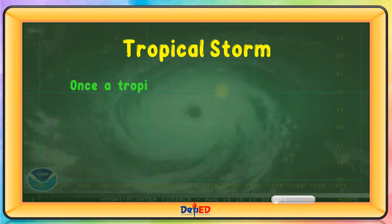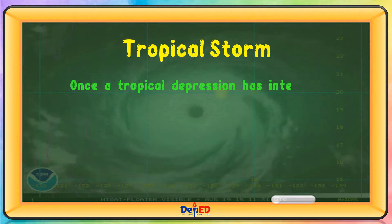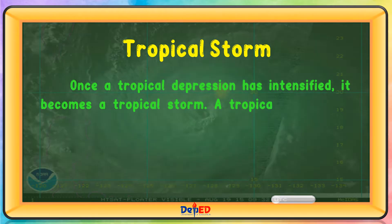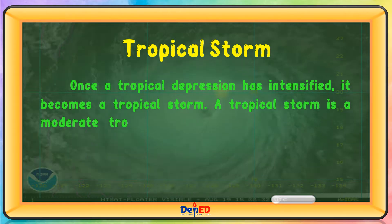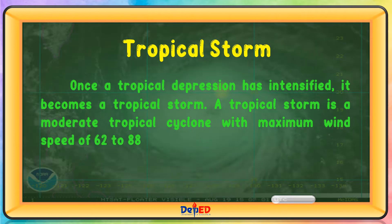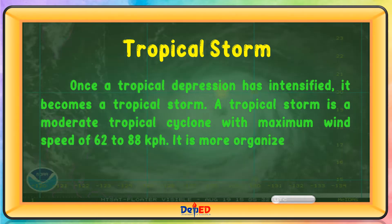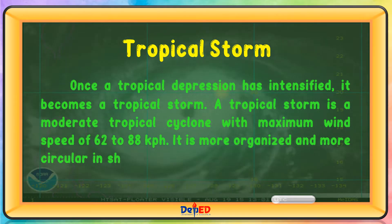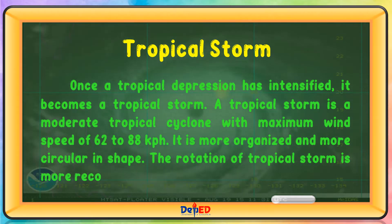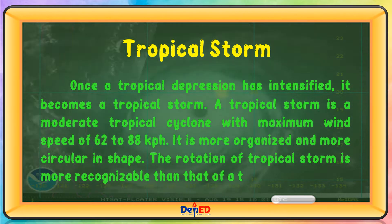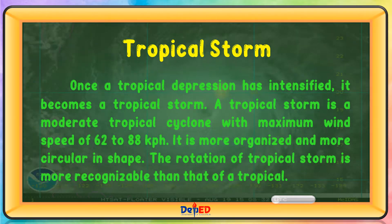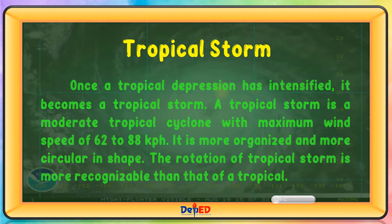Once a tropical depression has intensified, it becomes a tropical storm. A tropical storm is a moderate tropical cyclone with maximum wind speed of 62 to 88 kilometers per hour. It is more organized and more circular in shape. The rotation of a tropical storm is more recognizable than that of a tropical depression.